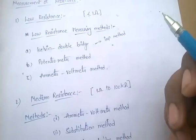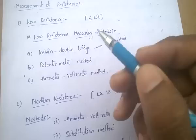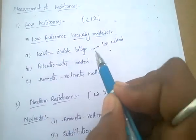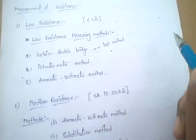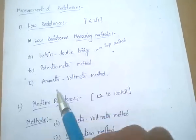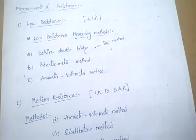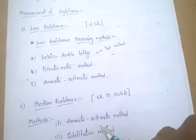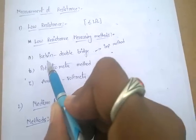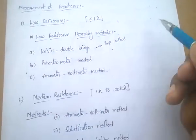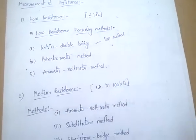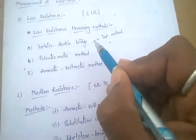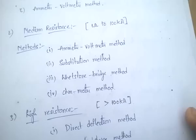Mainly asked: Kelvin double bridge is used to measure which type of resistance? The answer is low resistance. Kelvin double bridge is used to measure low resistance.